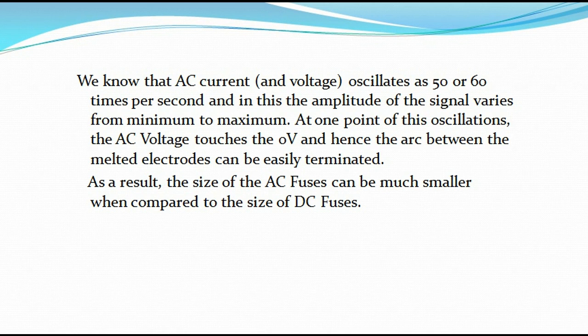At times the AC voltage touches zero volts and the arc between the metal electrodes can be easily terminated. What I want you to understand is that AC and DC have a lot of differences. One is that the AC fuse is smaller than the DC fuse. DC has a constant value, as I have given you some examples of previously.